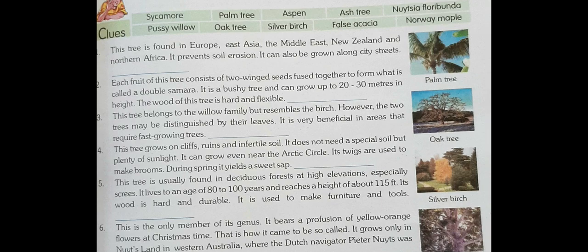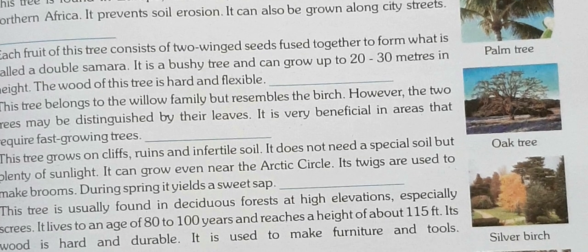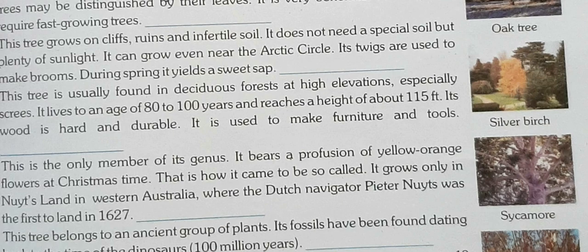Silver birch grows on cliffs, ruins, and infertile soil. Sycamore is found mainly in deciduous forests at high elevation — elevation means at high heights.